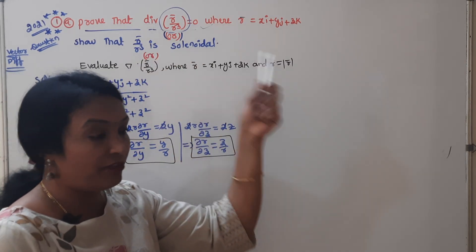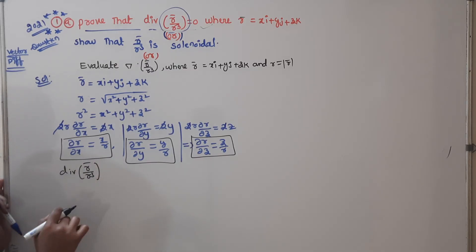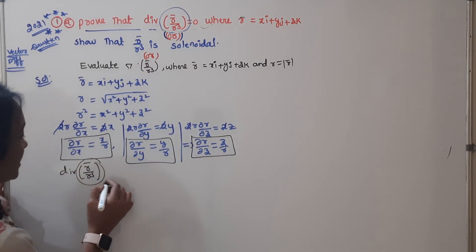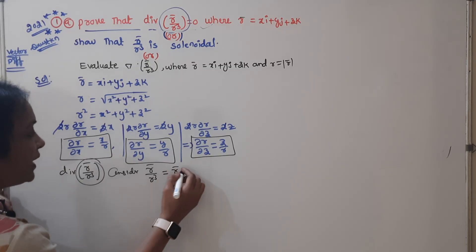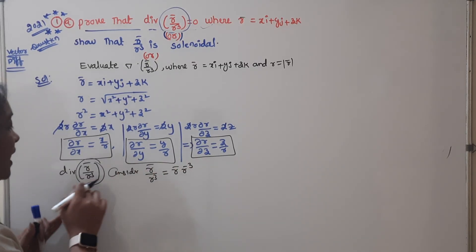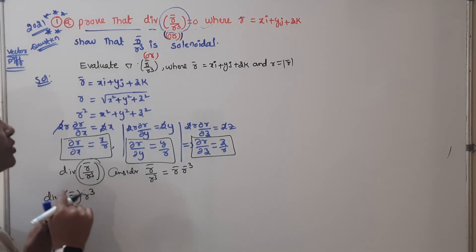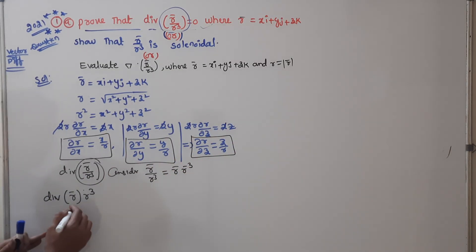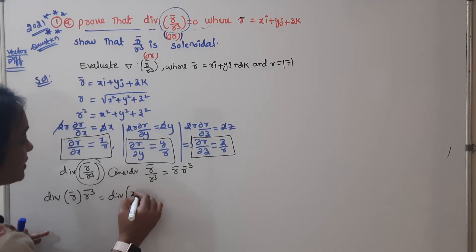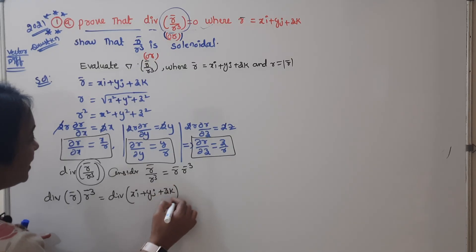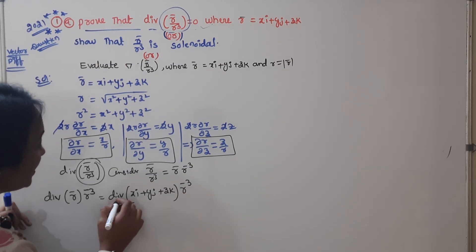First, consider the LHS part of the given problem: div(r̄/r³). We write this as r̄ · r^(-3). We know r̄ = xi + yj + zk, so we apply div to (xi + yj + zk) · r^(-3).